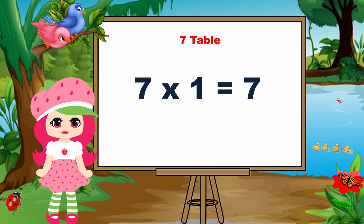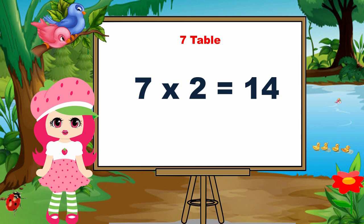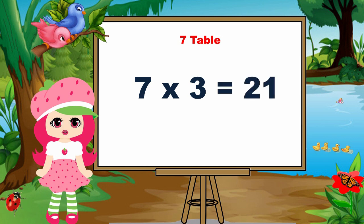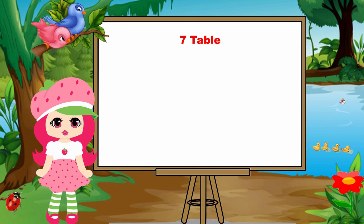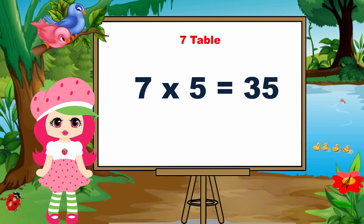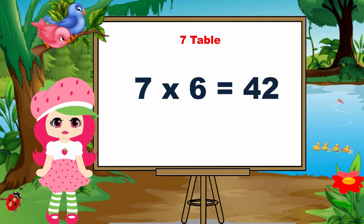Seven ones are seven. Seven twos are fourteen. Seven threes are twenty-one. Seven fours are twenty-eight. Seven fives are thirty-five. Seven sixes are forty-two.